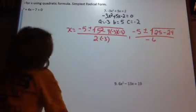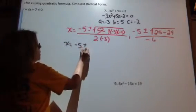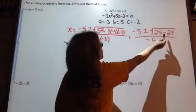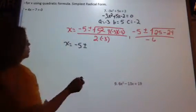Okay, now we can keep simplifying. So we have negative 5 plus or minus. 25 minus 24 is 1. Square root of 1 is 1.